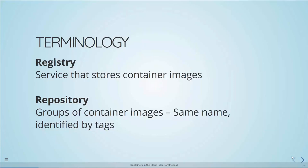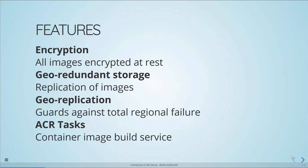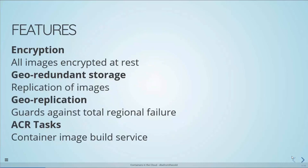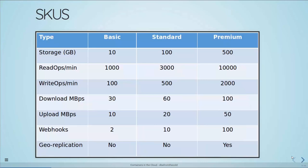Let's talk about some features of Azure Container Registry. First, encryption — all images are encrypted at rest when pushed and stored in the cloud. We have geo-redundant storage, which guards against a local regional storage failure by replicating images to different locations. The premium tier has geo-replication, which guards against a total regional failure. There's also ACR Tasks, a container image build service that can use webhooks to hook into GitHub repositories — so if you push a commit changing a Dockerfile, it will automatically build a new container image. There are four tiers: basic, standard, premium, and a deprecated classic tier.